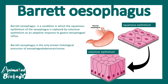Barrett's esophagus is the only known histological precursor of esophageal adenocarcinoma — basically cancer of the esophagus. It is a reversible pathological situation, but if untreated it can lead to cancer. That is why understanding the mechanism is important. It's an example of metaplasia, which is one type of cellular adaptive response.